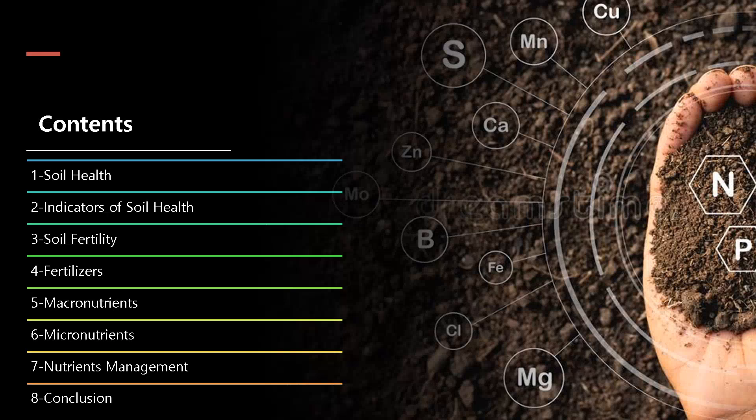Let us start with our first slide having contents regarding today's lecture. In this class, I will discuss in detail soil health in terms of soil fertility. Our core aim will be to identify and discuss the most important indicators which can be used for the assessment of soil health. We will also discuss soil fertility, especially essential nutrients involved in the development of soil fertility. Criteria of essentiality of nutrients will also be discussed, including macro and micronutrients.